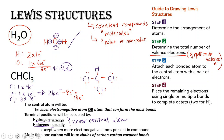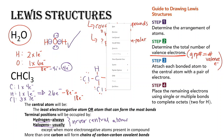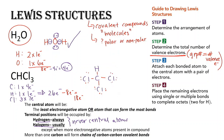Let's count and make sure we have the right number: two, four, six, eight, ten, twelve, fourteen, sixteen, eighteen, twenty, twenty-two, twenty-four, twenty-six. All 26 electrons are accounted for.